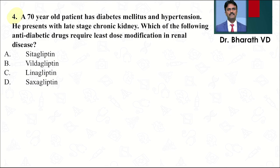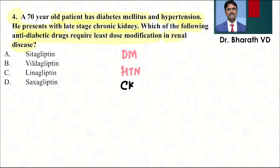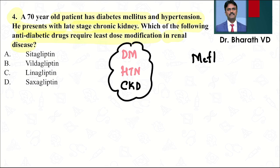Question four: a 70-year-old patient with diabetes, hypertension, and late-stage chronic kidney disease. Which antidiabetic drug requires the least dose modification in renal disease? This is a very commonly asked question. In late-stage kidney disease, metformin is absolutely contraindicated.